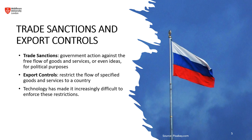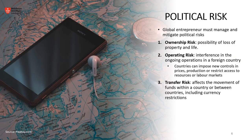Additionally, cryptocurrencies and other digital financial instruments can make it harder to track and control the flow of funds related to sanctioned entities. Taking all of this information regarding political risk into consideration, global entrepreneurs must manage and mitigate political risks in three ways: ownership risk — the possibility of loss of property and life; operating risk — interference in ongoing operations where countries can impose new controls on prices, production, or restrict access to resources or labor markets; and transfer risk, which affects the movement of funds within or between countries, including currency restrictions.